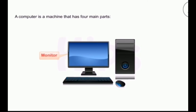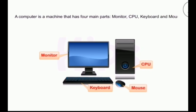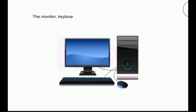The four main parts are: first is monitor, second is CPU, third is keyboard, and fourth is mouse. The monitor, keyboard, and mouse are attached to the CPU by wires. We have to attach all three parts with the CPU using wires.